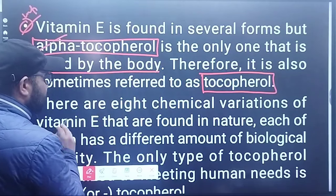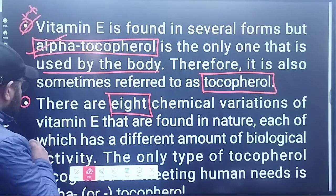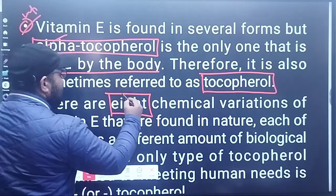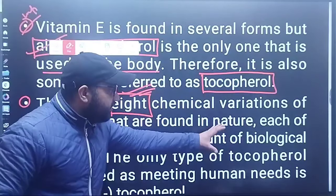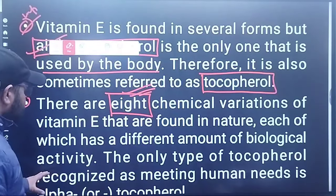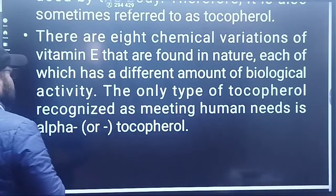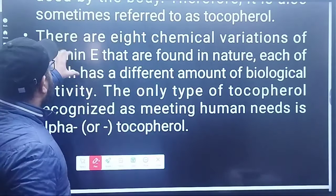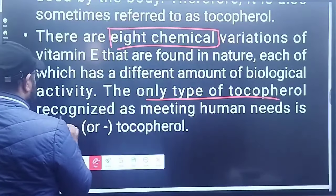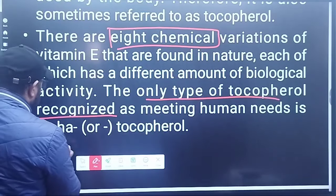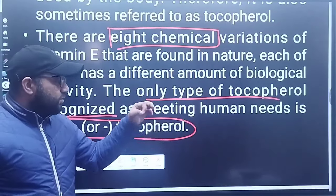There are eight chemical variations of Vitamin E found in nature, each with different amounts of biological activity. Among all eight variations, the only type of tocopherol recognized as meeting human needs is alpha-tocopherol. Remember: eight chemical variations exist, and it is alpha-tocopherol that is important for human needs.